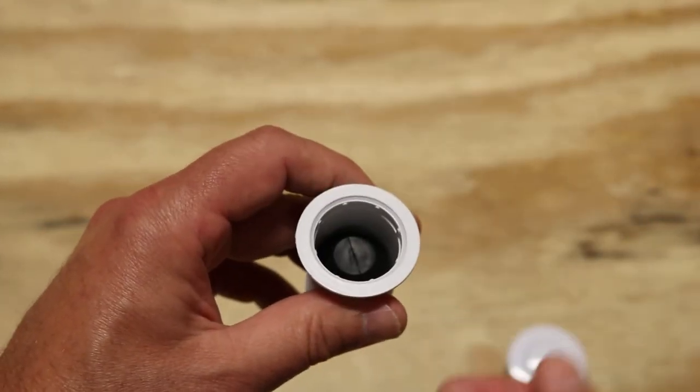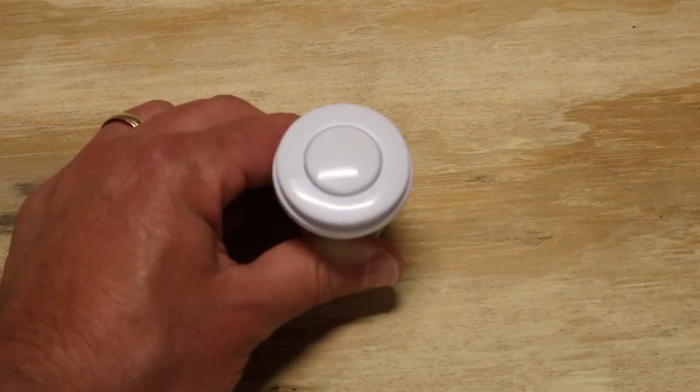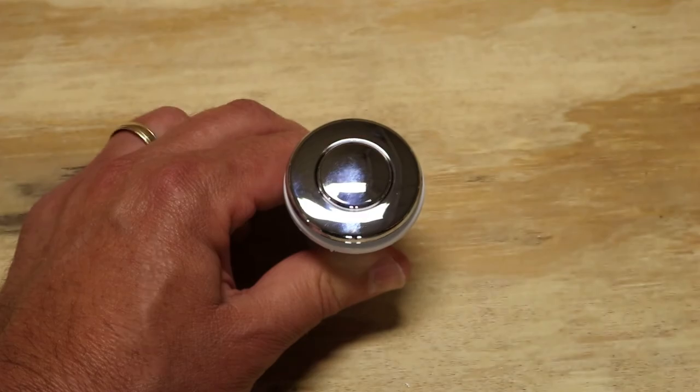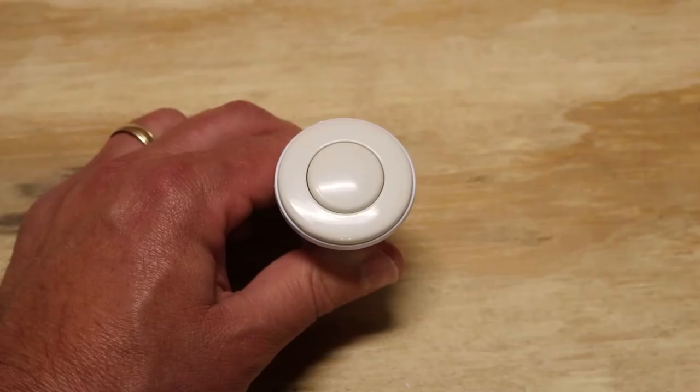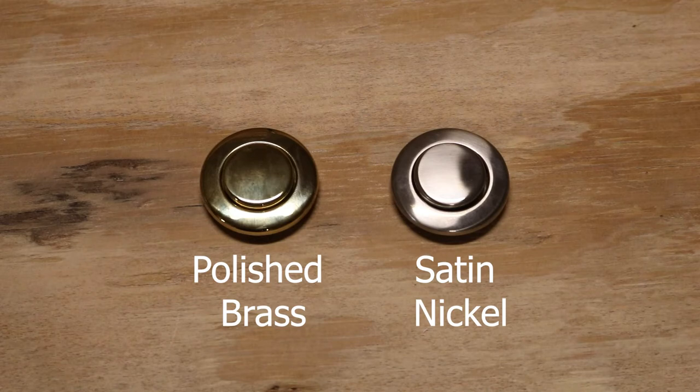This button is available in seven different colors: white, almond, chrome, oil rubbed bronze, biscuit which is an off-white, polished brass, and satin nickel. You can order just the trims if you wanted to. We have those on the website as well. You can order from the links below if you're watching this video on YouTube.